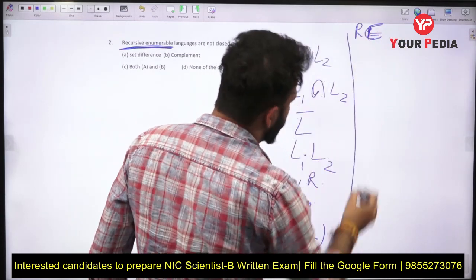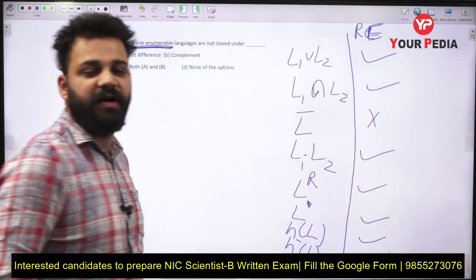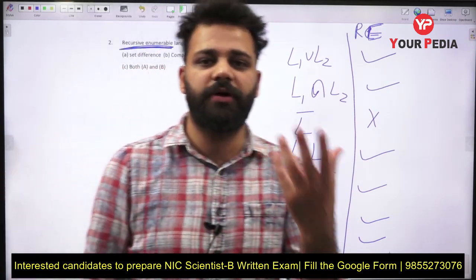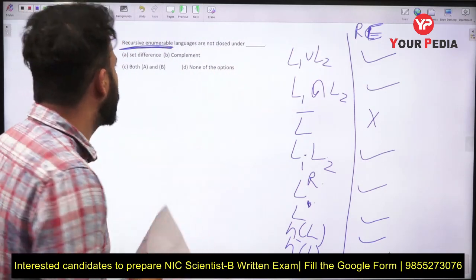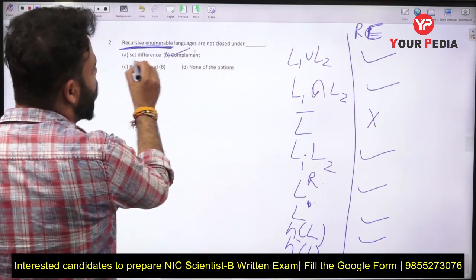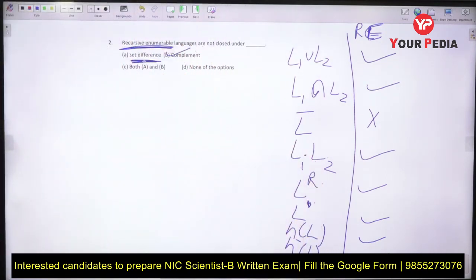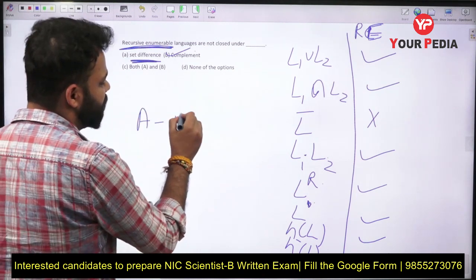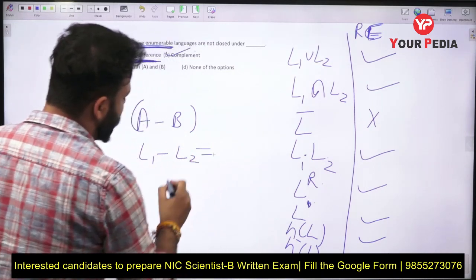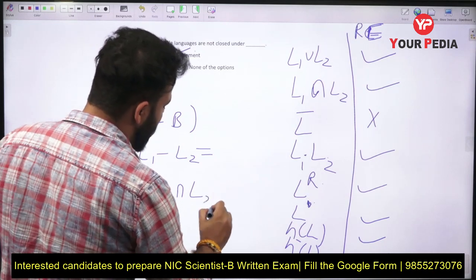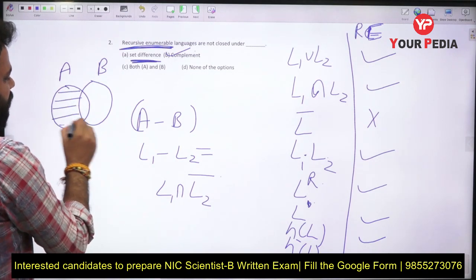RE languages are closed under all those operations except complement. So when you study that table, you don't need to remember where RE is closed — you just need to remember where it is not closed. RE is not closed under complement. Now set difference is a property derived from another expression: set difference A minus B is L1 intersection L2-complement.